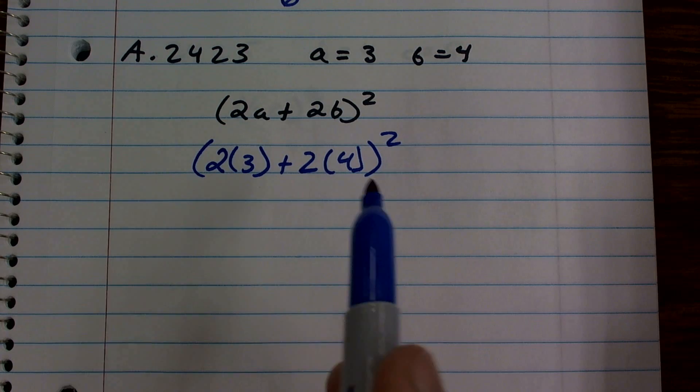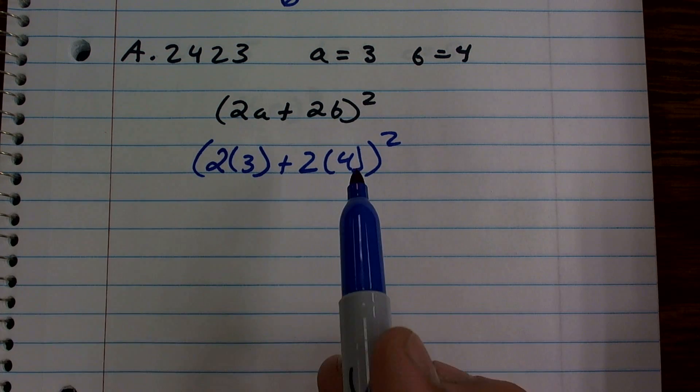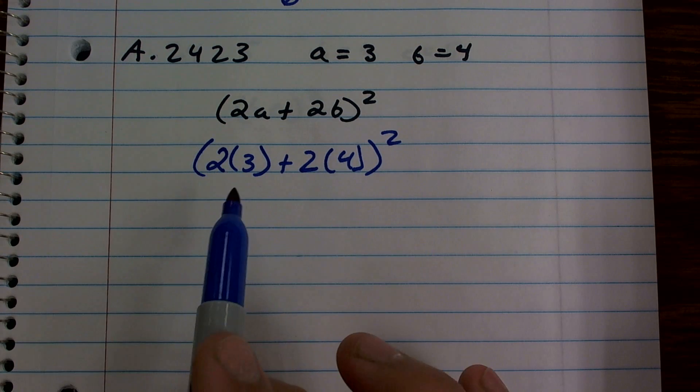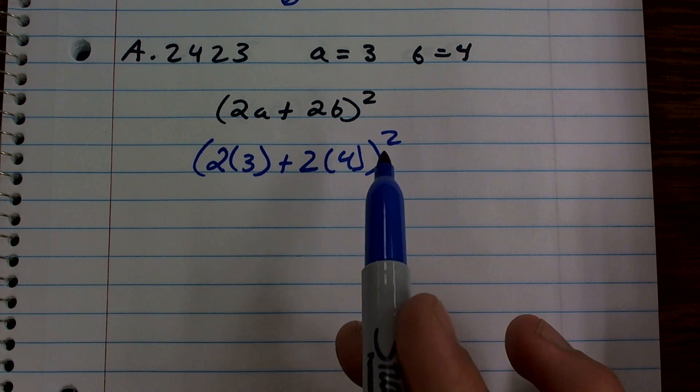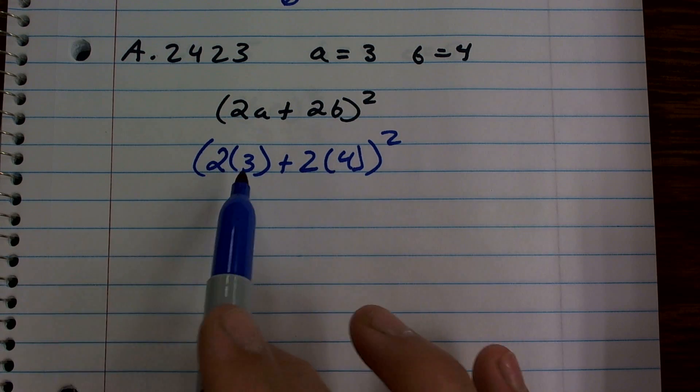So now using the order of operations, I have to do my multiplication. First of all, I have to do what's inside the parentheses first. What's inside the parentheses, now I have to do order of operations all over again. So now I notice that inside these parentheses, there's no exponents.